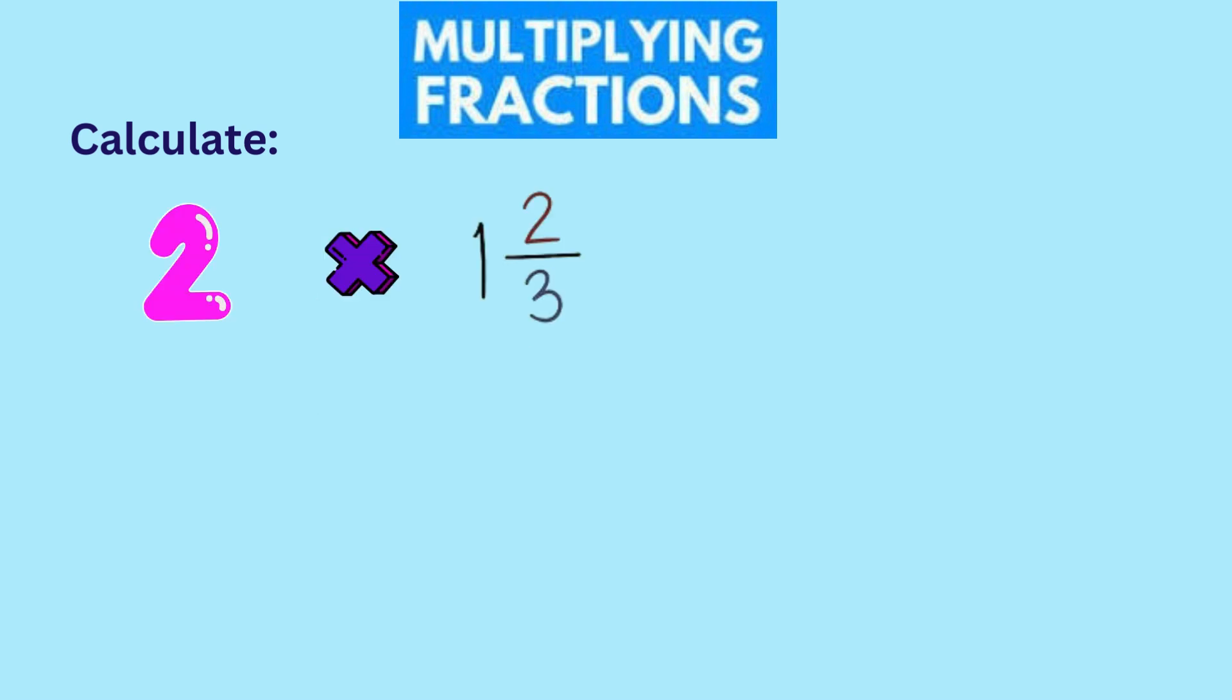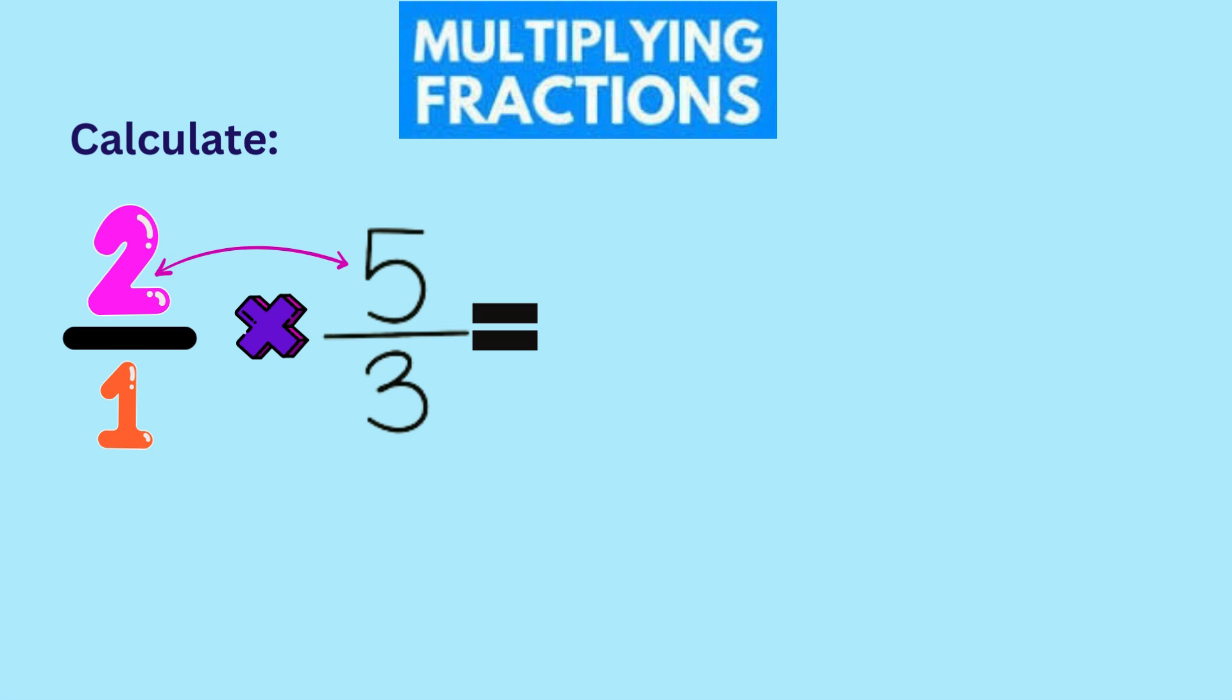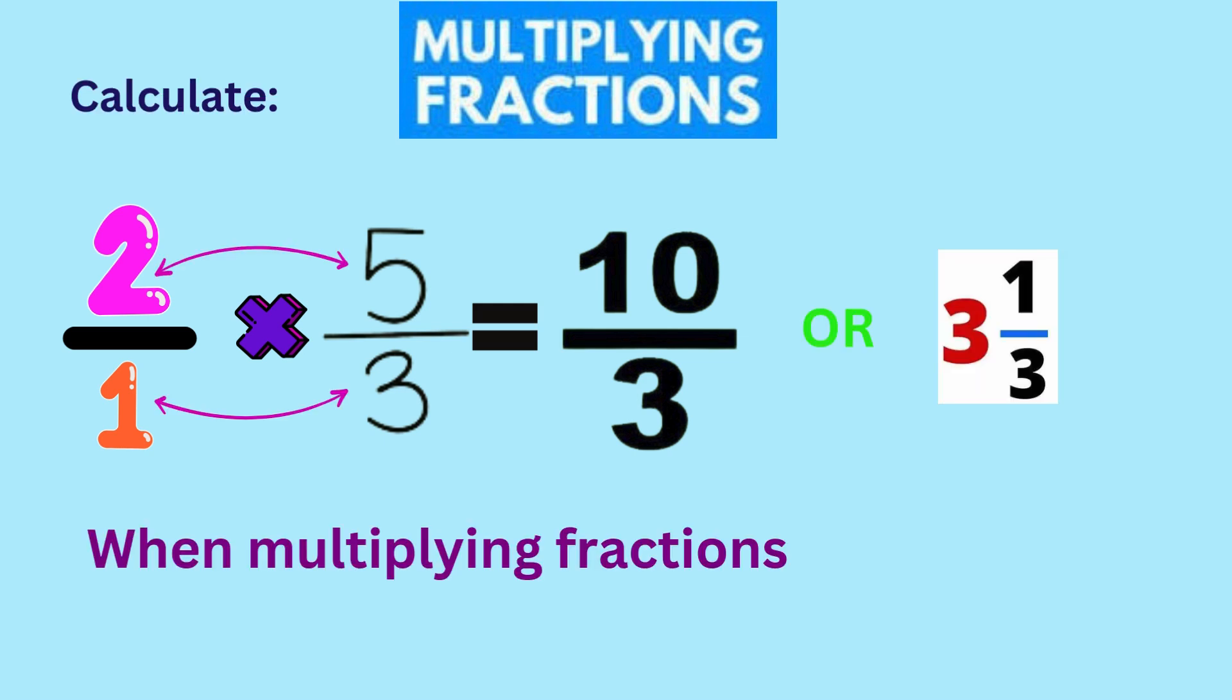What about two times one-and-two-thirds? We can rewrite any number as itself over one. Remember, earlier we converted one-and-two-thirds as five-thirds, so the problem is two-over-one times five-thirds. Multiplying the numerators, we get ten. And multiplying the denominators, we get three. Our solution is ten-thirds, or three-and-a-third.